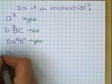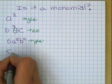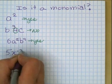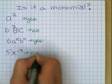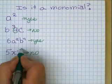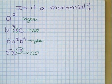Here's another example. 5x to the negative third power. Is that a monomial? No, it's not. If you said no because it has a negative exponent, you are correct.